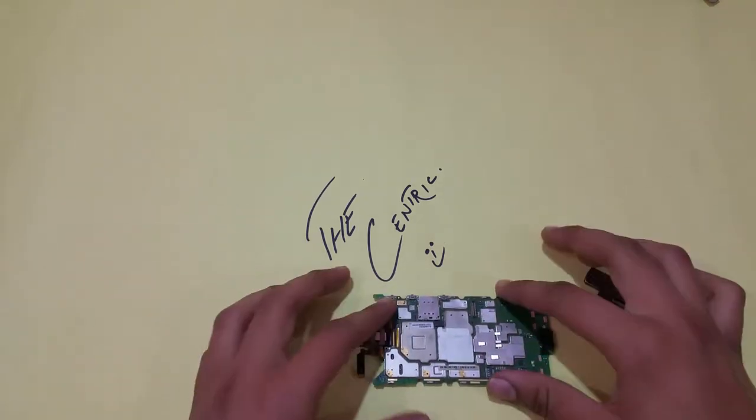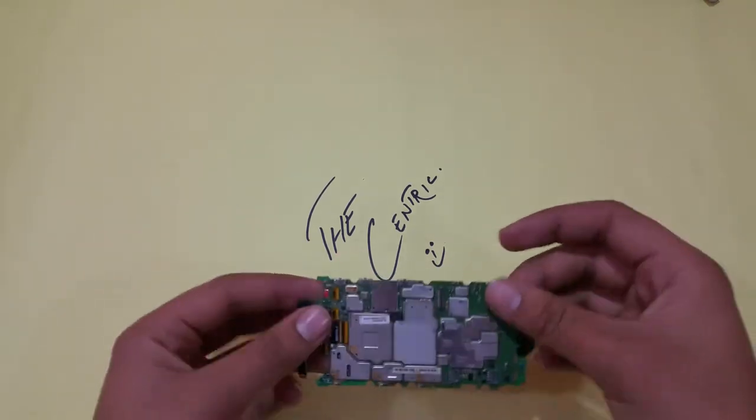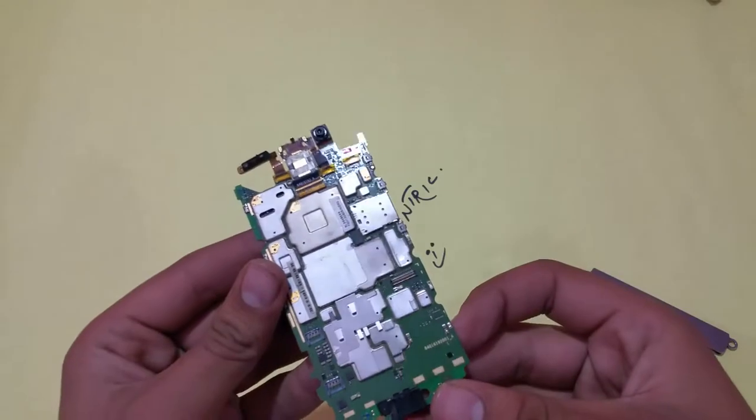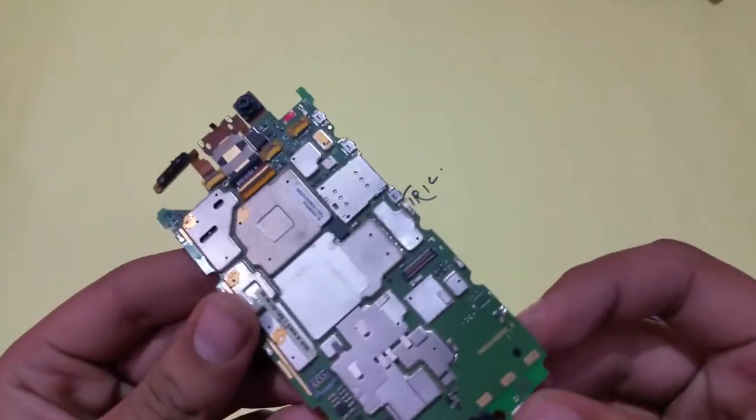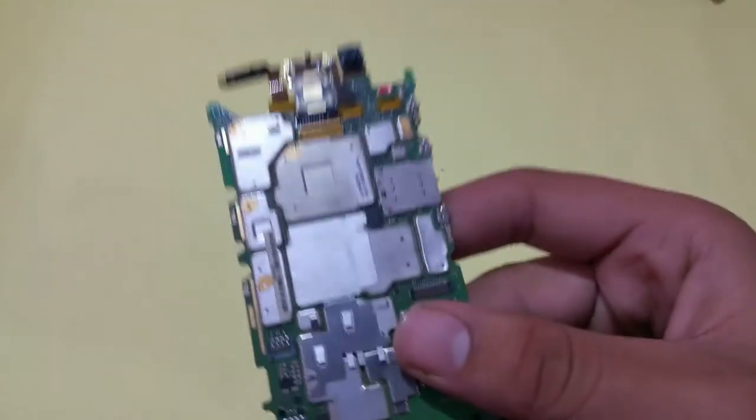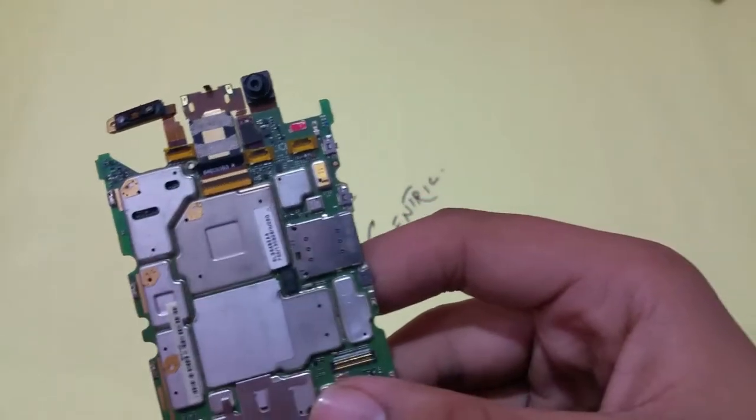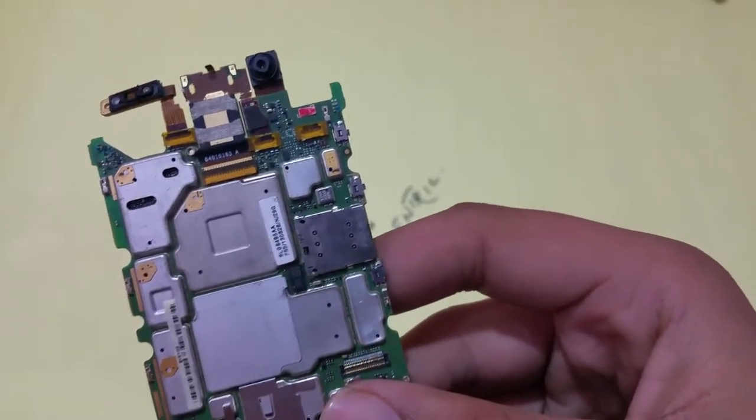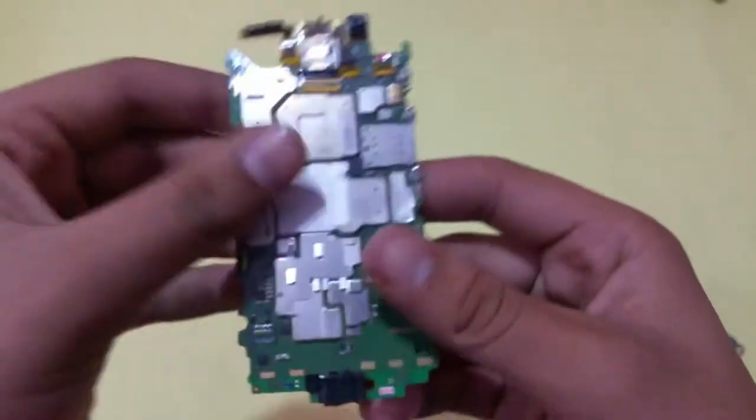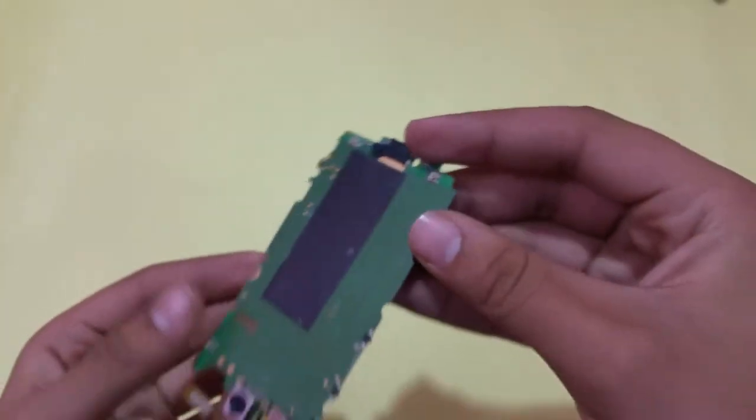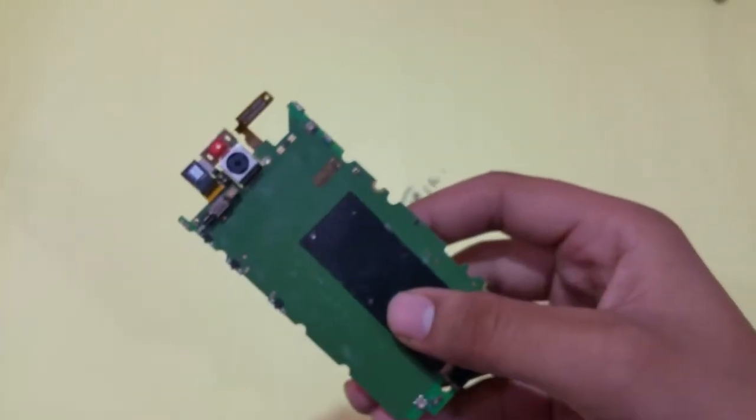Welcome to a new video from The Centric. In this video, we're going to talk about smartphone cameras and what's inside them. This is a smartphone board with two cameras on top - a back camera and a front camera.